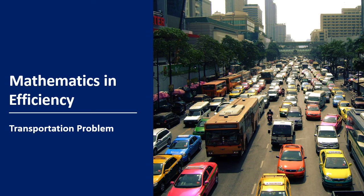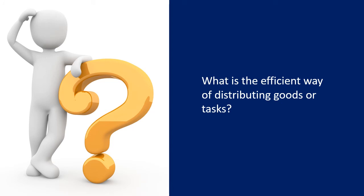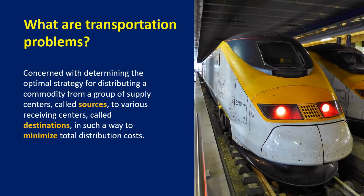Let us now discuss the second part of Mathematics in Efficiency. We will discuss transportation problems. The question is, what is the efficient way of distributing goods or tasks? Transportation problems are concerned with determining the optimal strategy for distributing a commodity from a group of supply centers called sources to various receiving centers called destinations, in such a way to minimize total distribution cost. If you are on the part of the supplier, you're the source, and you will transport your goods to your centers called destinations, wanting to have the minimum possible distribution cost.